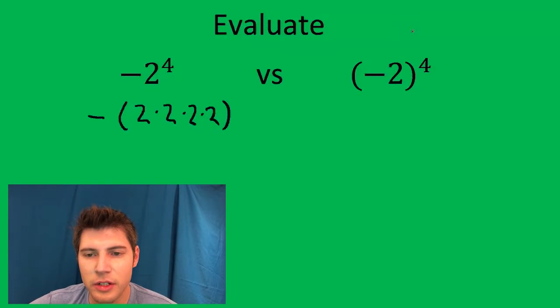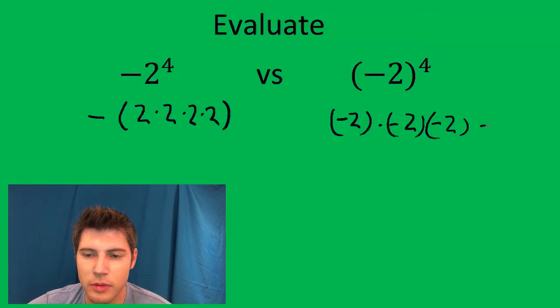Whereas in this one, you're going to do what's inside the parentheses first and then exponent. So it's going to end up being negative two times negative two times negative two times negative two.